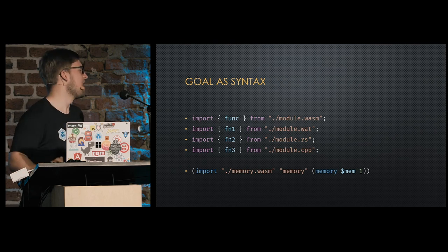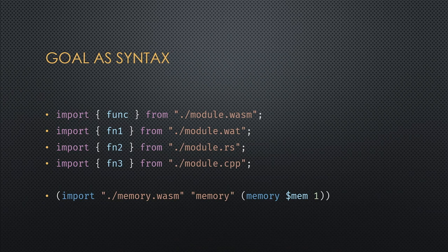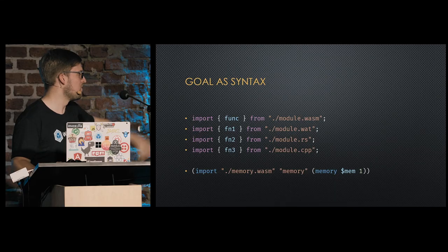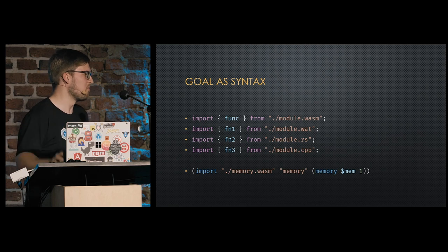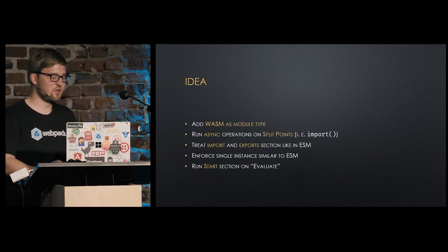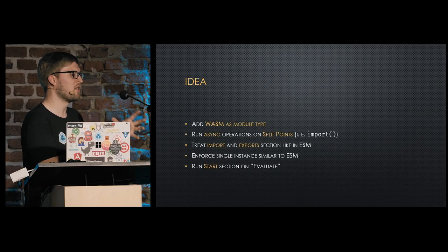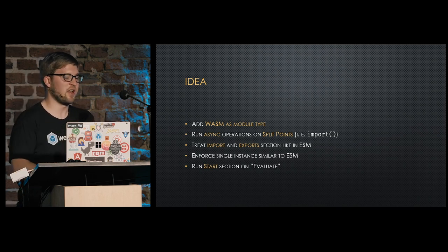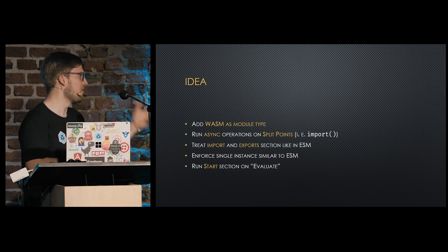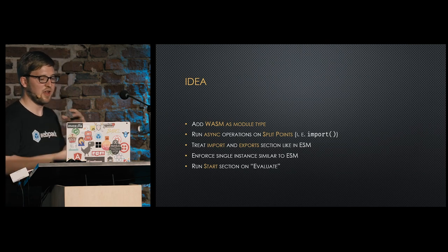The goal in code is to be able to import WASM modules, compiled WASM modules, and also import from WASM to ECMAScript modules. The idea was to add WASM as a module type and run all async operations at split points — split points are asynchronous, so we can move all async operations there and hide them from the user. When you do an import, all modules in the lazily-loaded part are fetched, compiled, instantiated, and evaluated at that point.